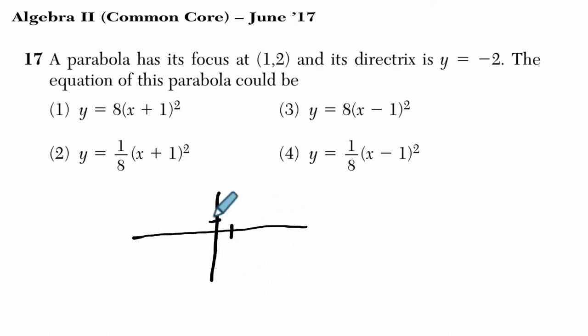So here's my focus, (1,2). I'm going to put that point there. And the directrix, they're telling us, is y equals negative 2. It's down here. That's a horizontal line at y equals negative 2.